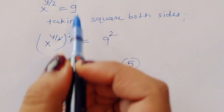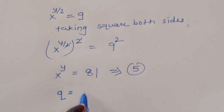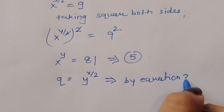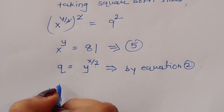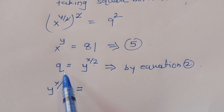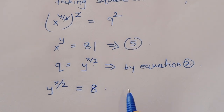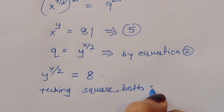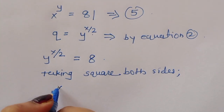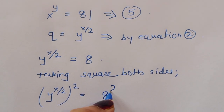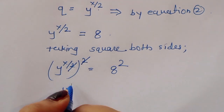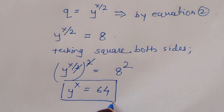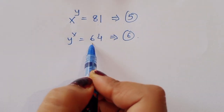From equation 2, q equals y power x by 2. Since q equals 8, we have y power x by 2 equals 8. Taking square on both sides, y power x by 2 squared equals 8 squared, so y power x equals 64. This is equation 6.